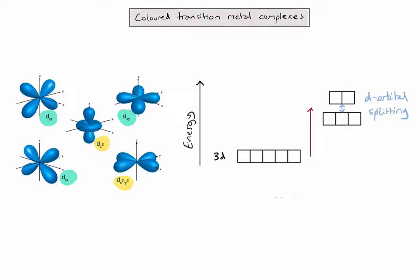Now, there are many different ways that d-orbitals can split, but for IB chemistry, we're going to focus just on this example, where two d-orbitals are of a slightly higher energy than the other three.